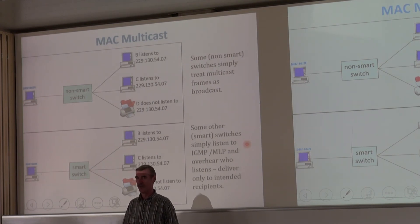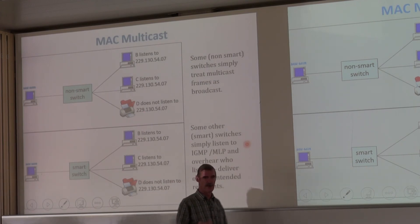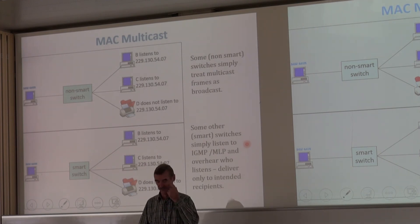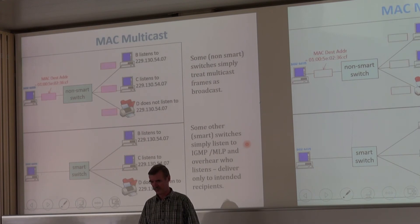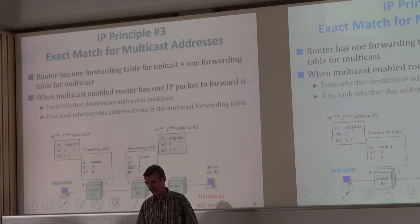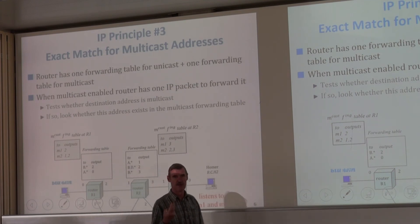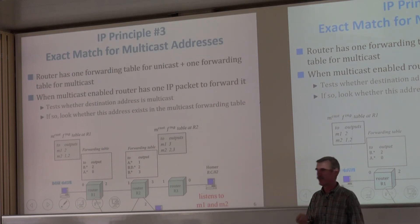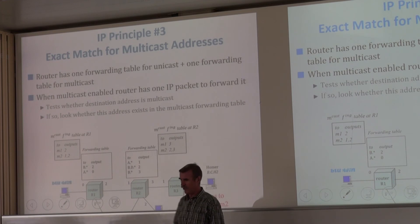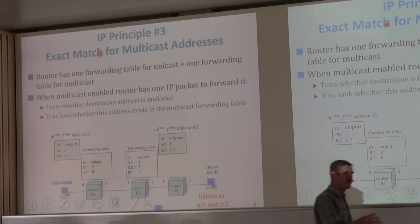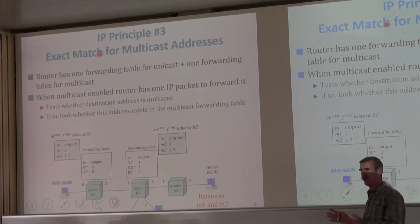If you have a smart switch, your printer won't receive your Swisscom video. This means there is a third principle for IP multicast: we go from longest prefix match to exact match. A router needs a separate way of handling the routing table for multicast versus unicast. For big routers the processing is handled separately. When we have a unicast destination address, we do longest prefix match; for multicast, we do exact matching — looking for exactly a table entry like multicast address M1 should go to port 3.